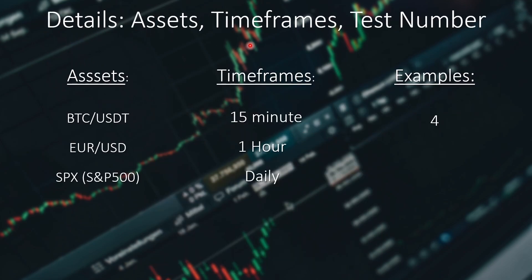Let's see the assets, timeframes and test numbers. I am using 3 different assets: BTCUSDT, EURUSD, and SPX or the S&P 500 index. For timeframes I chose the 15 minute, the 1 hour, and the daily. The 5 minute chart might also be interesting — maybe I'll test that in a future video. I will test 4 examples on each of these combinations, coming out to a total of 36 tests.